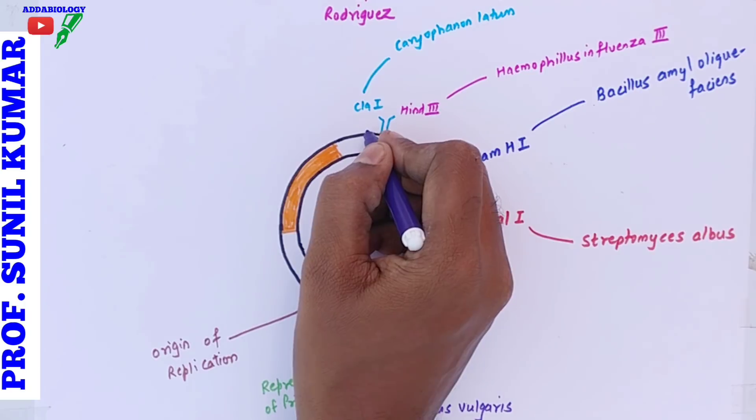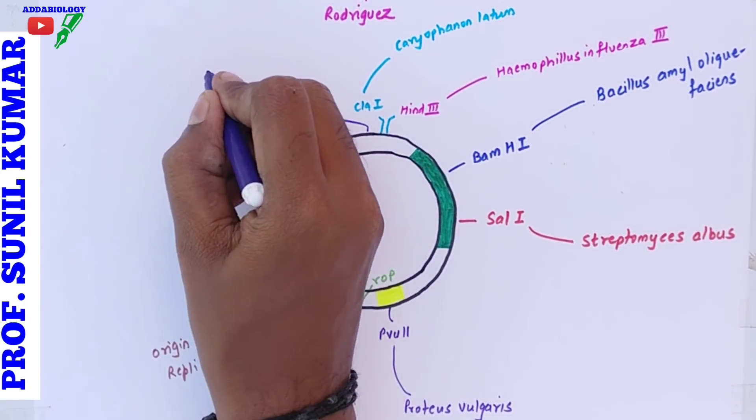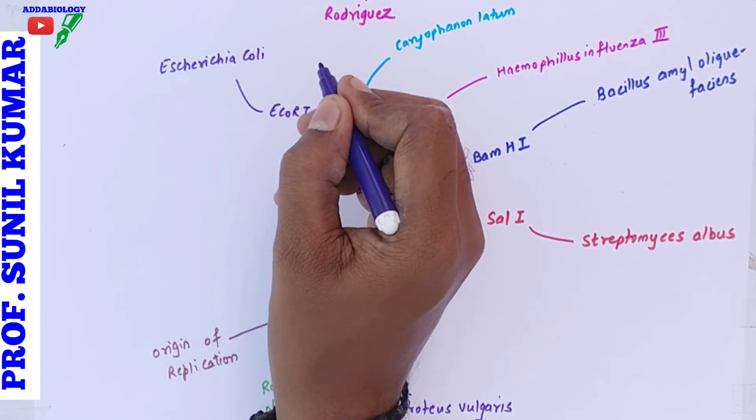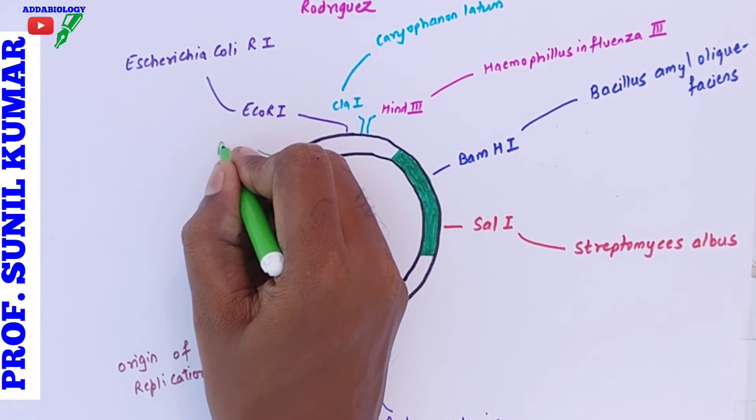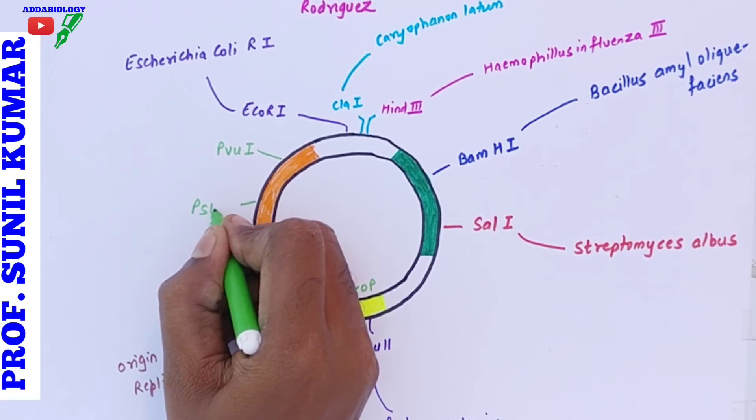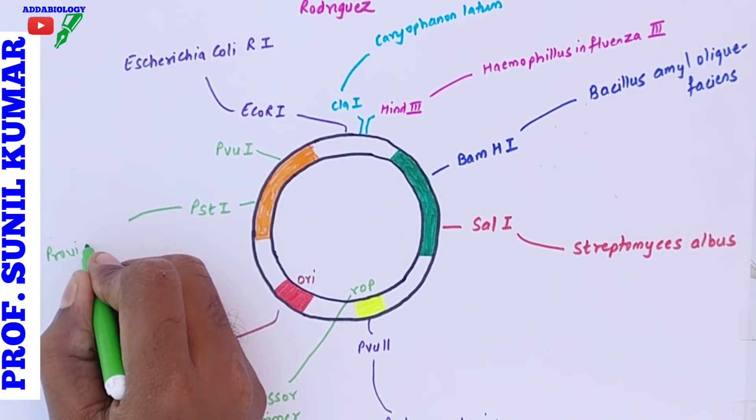We have the next one, EcoRI, that stands for Escherichia - that is genus, coli is the species, R is the strain RY13, and 1 is the order to be discovered. These are the positions of various enzymes on the plasmid and it's very important for NEET exam.